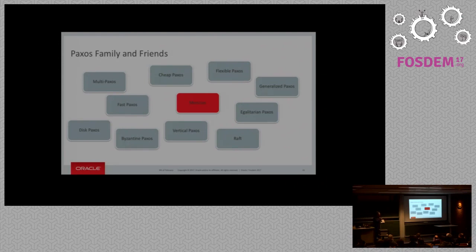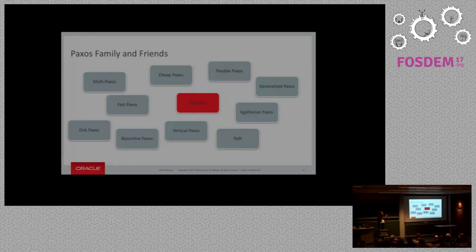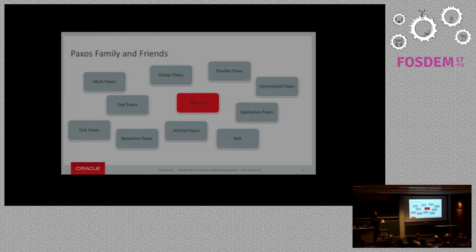We decided to use Paxos, but there are many variations: Multi-Paxos, Fast Paxos, Disk Paxos. We started developing our in-house implementation, and later came across a paper called Mencius. Our solution is quite similar to Mencius, though it was not initially based on it. There are a few differences between our implementation and Mencius, but if you want a paper with many similarities to our solution, Mencius is the one I would point to.